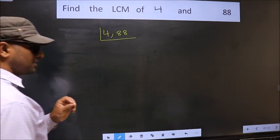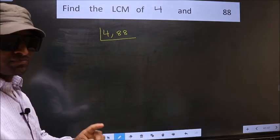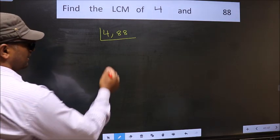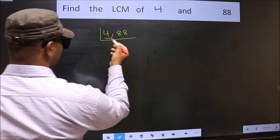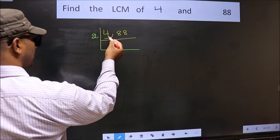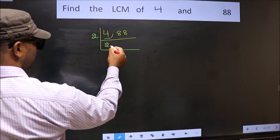This is your step 1. Now you should focus on the first number which is 4 here. 4 is even. So you take 2. When do we get 4 in 2 table? 2, 2 is 4.